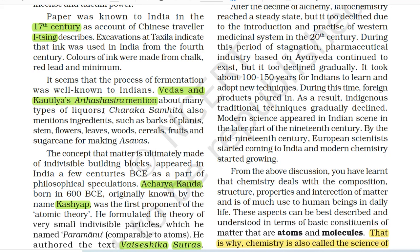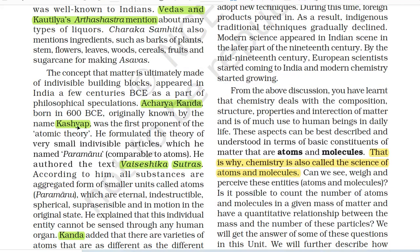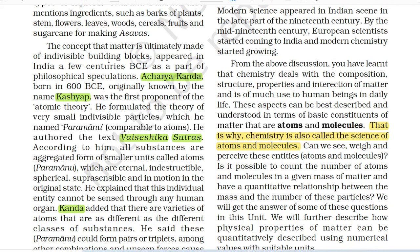Vedas and Kautilya's Arthashastra mentioned many types of liquors. Charak Samhita also mentions ingredients such as barks of plants, stems, flowers, leaves, woods, cereals, fruits and sugarcane for making asavas. The concept that matter is ultimately made of indivisible building blocks appeared in India a few centuries before the common era as part of philosophical speculations. Acharya Kanda, born in 600 BCE, originally known by the name Kashyap, was the first proponent of the atomic theory.